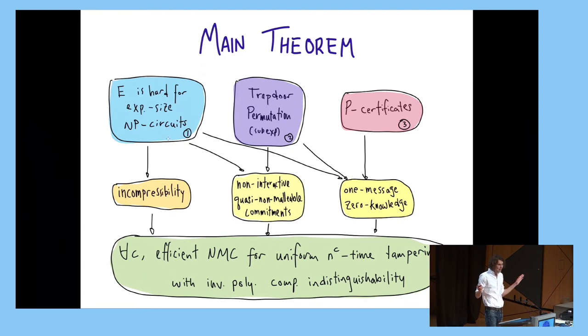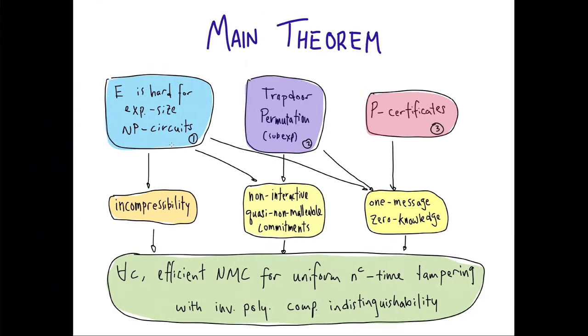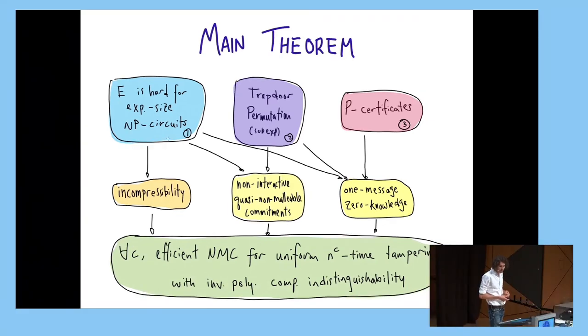Just to back up, we show that, assuming E is hard for exponential size NP circuits, assuming also trapdoor permutations that are sub-exponentially secure, and P certificates, we can construct efficient, non-malleable codes for bounded polynomial time-tampering. And along the way, we construct non-interactive, quasi-non-malleable commitments, and show some other connections to complexity theory that hopefully you all will find interesting. And I'll end there.